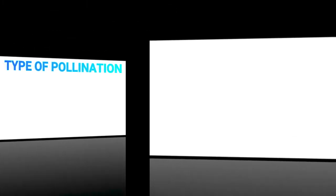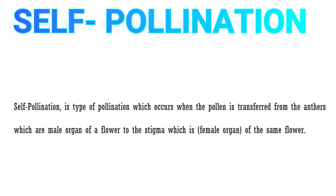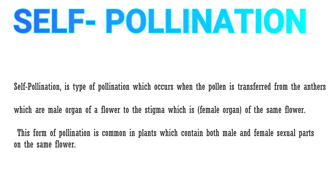Self-pollination is a type of pollination which occurs when the pollen is transferred from the anthers, which are the male organ of a flower, to the stigma, which is the female organ of the same flower. This form of pollination is common in plants which contain both male and female sexual parts on the same flower.